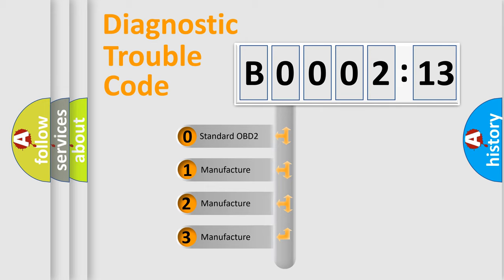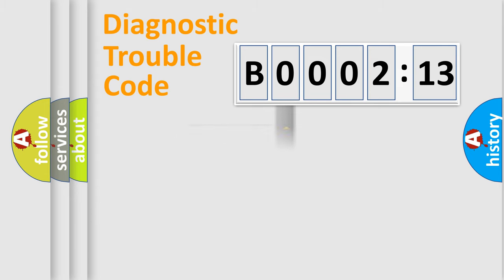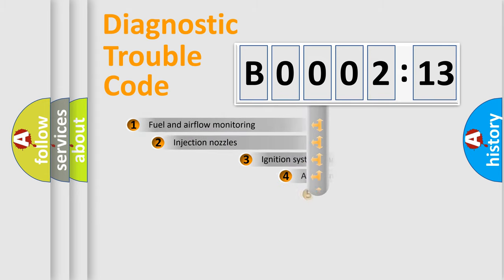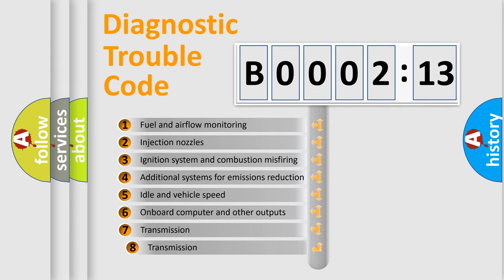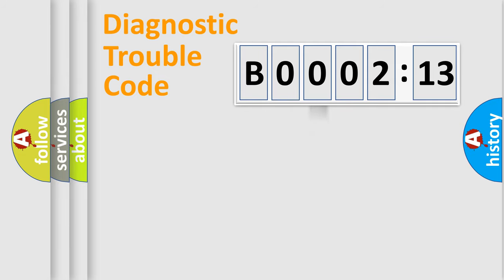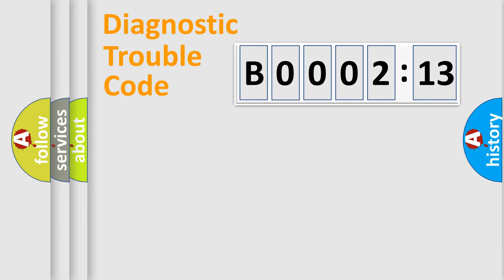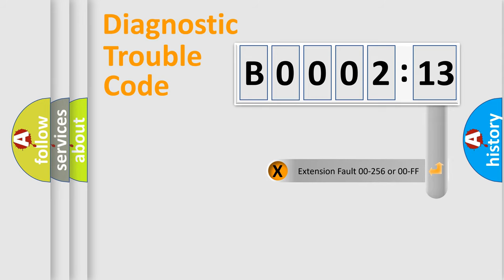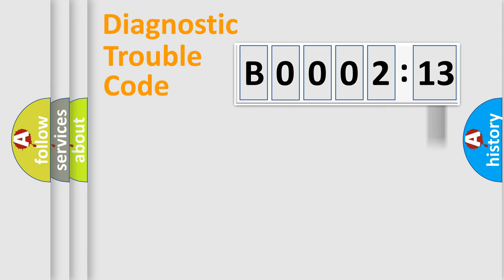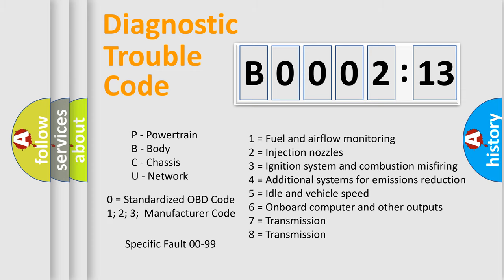If the second character is expressed as zero, it is a standardized error. In the case of numbers 1, 2, or 3, it is a manufacturer-specific error code. The third character specifies a subset of errors. This distribution is valid only for the standardized DTC code. Only the last two characters define the specific fault of the group. The add-on to the error code serves to specify the status in more detail — for example, a short to ground. Such a division is valid only if the second character is expressed by the number zero.